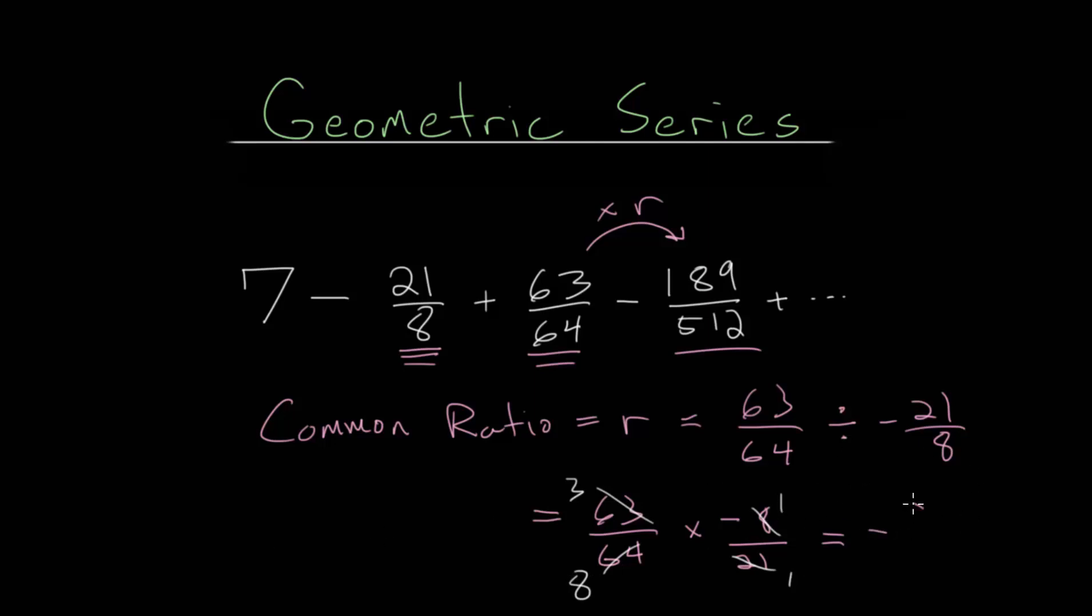Now, just to check that this is indeed a geometric series, we should show that you actually do multiply by the common ratio to go from one term to the next. So, we already used these two terms, so let's just prove to ourselves that 7 multiplied by minus 3 eighths does give us minus 21 over 8. And you can see that it does. So, that just, first of all, lets us be confident that we found the right common ratio, and it also demonstrates this is geometric in nature.